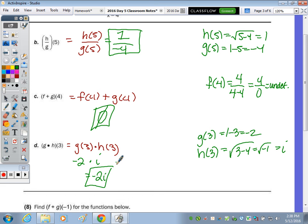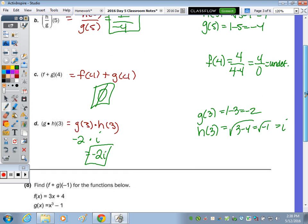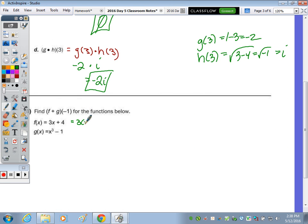And last one, number 8, find F plus G of negative 1. So plug in negative 1 to both, and then we'll add our answers. So 3 times negative 1 is negative 3 plus 4 is 1. And then what's negative 1 cubed minus 1? Negative 1 cubed is negative 1, so then negative 1 minus 1 is negative 2. Now I need to add those two answers. So F of negative 1 plus G of negative 1 means 1 plus a negative 2, which is a negative 1.